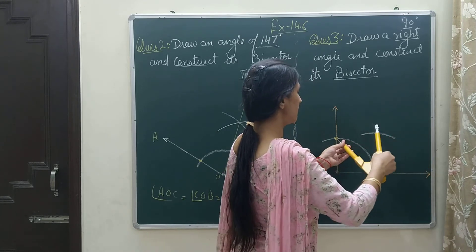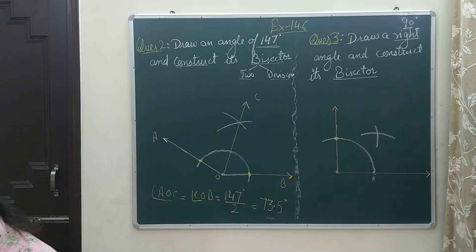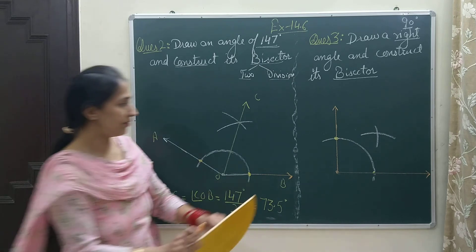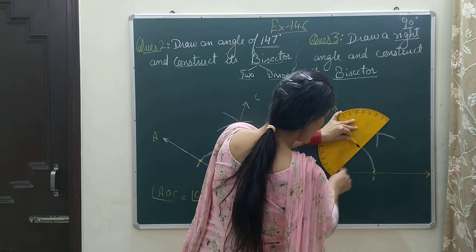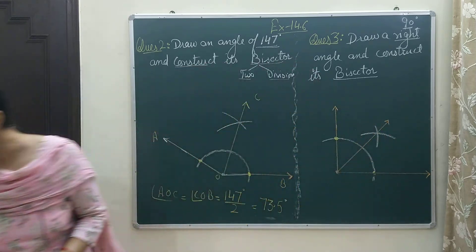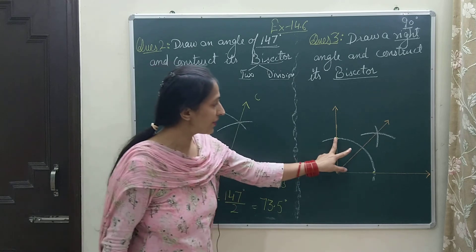First arc and second arc. Now I can join it. When I join, I get the bisection for the 90-degree angle.